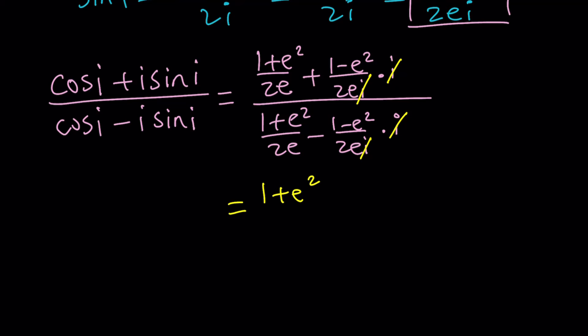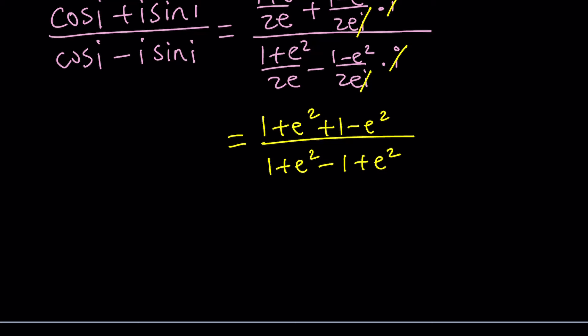1 plus e squared plus 1 minus e squared divided by 1 plus e squared minus, I have to negate it because there's a minus sign in front of the parentheses. And then this expression can further be simplified. e squared cancels out. 1 cancels out. We end up with 2 over 2e squared, which can be written as 1 over e squared. If you want to write it as e to the power negative 2, you can do that as well.